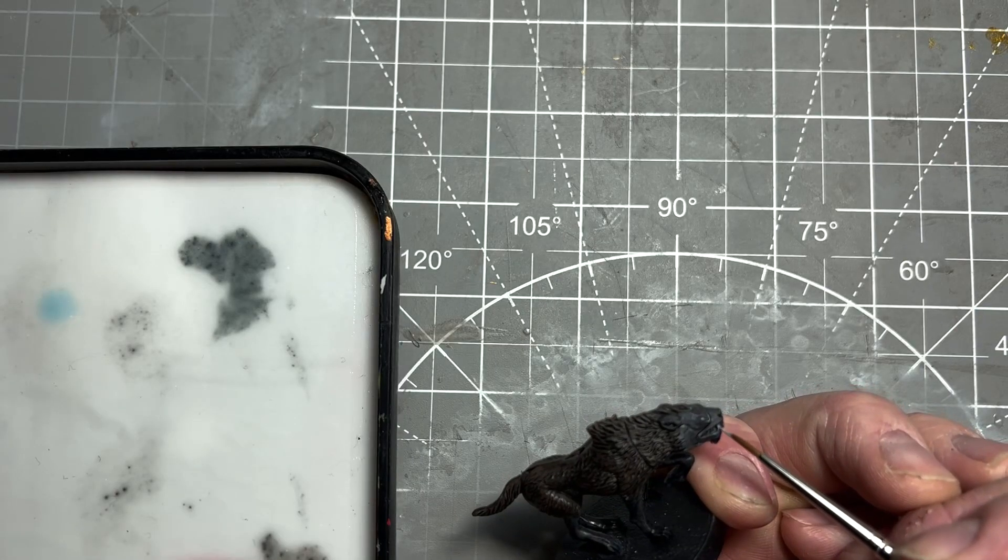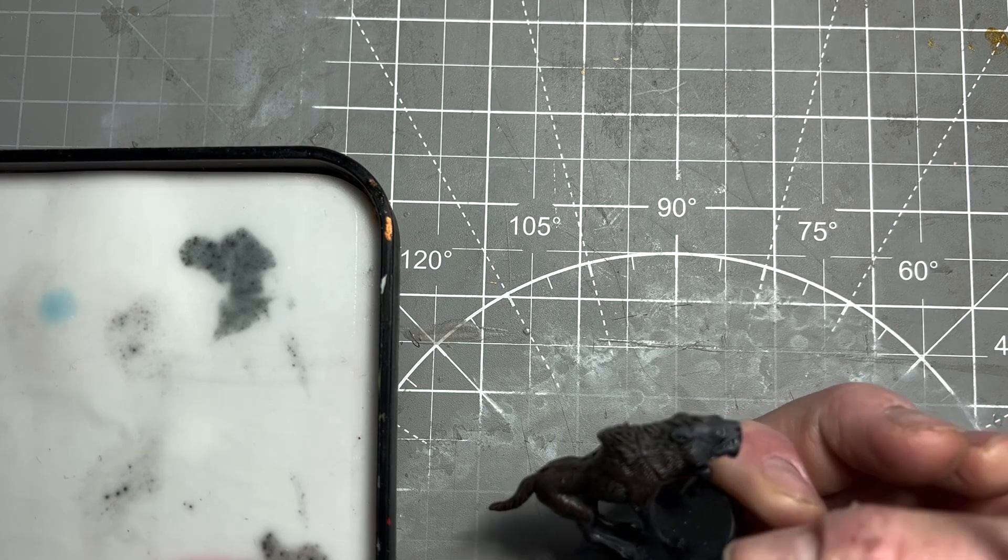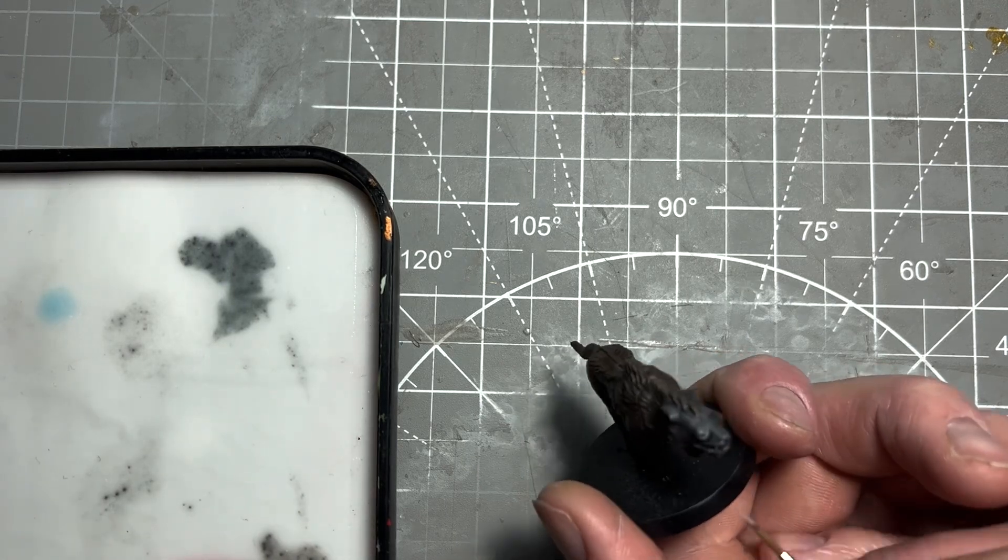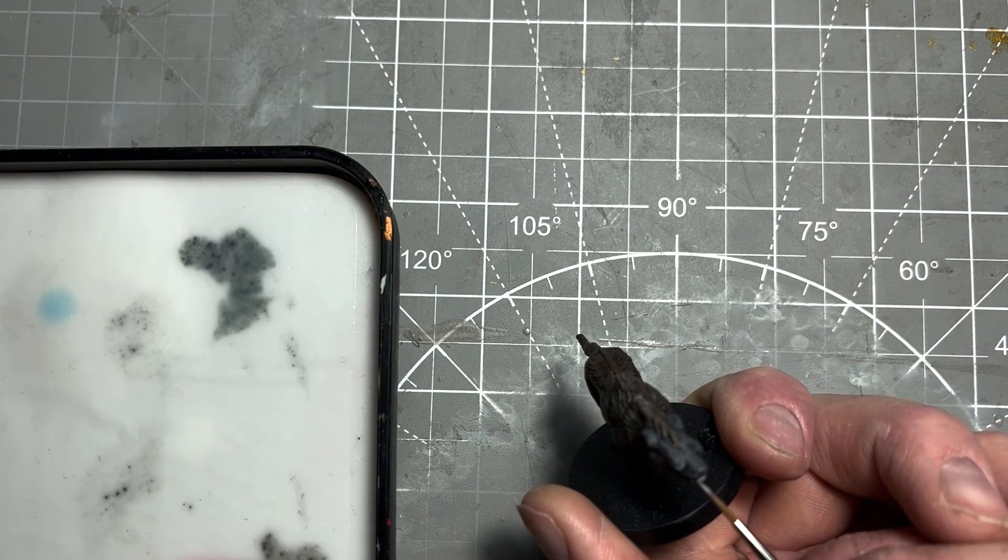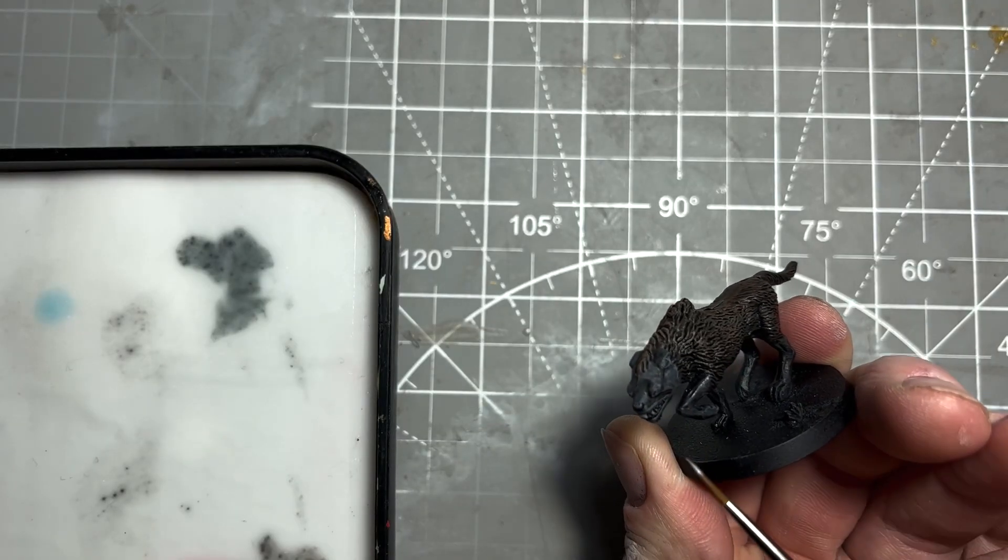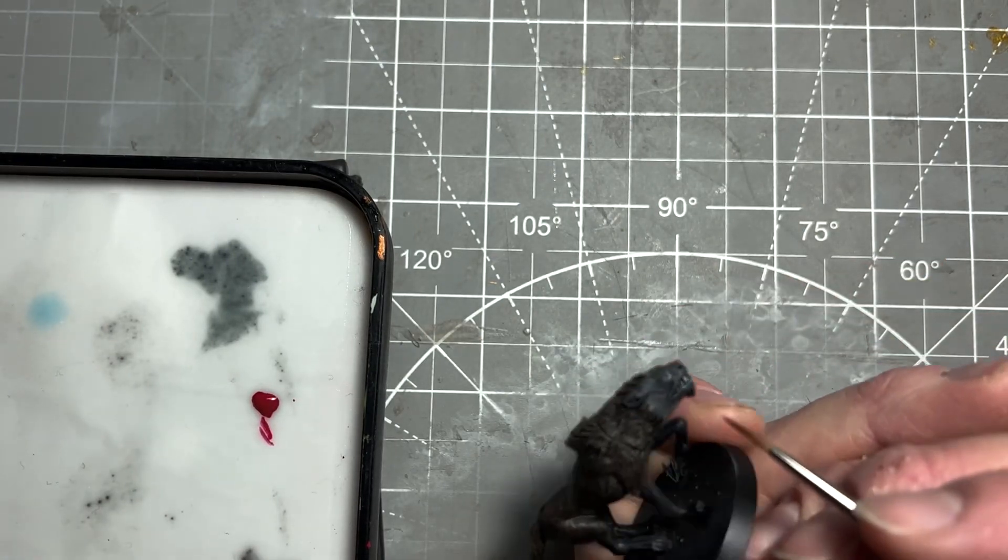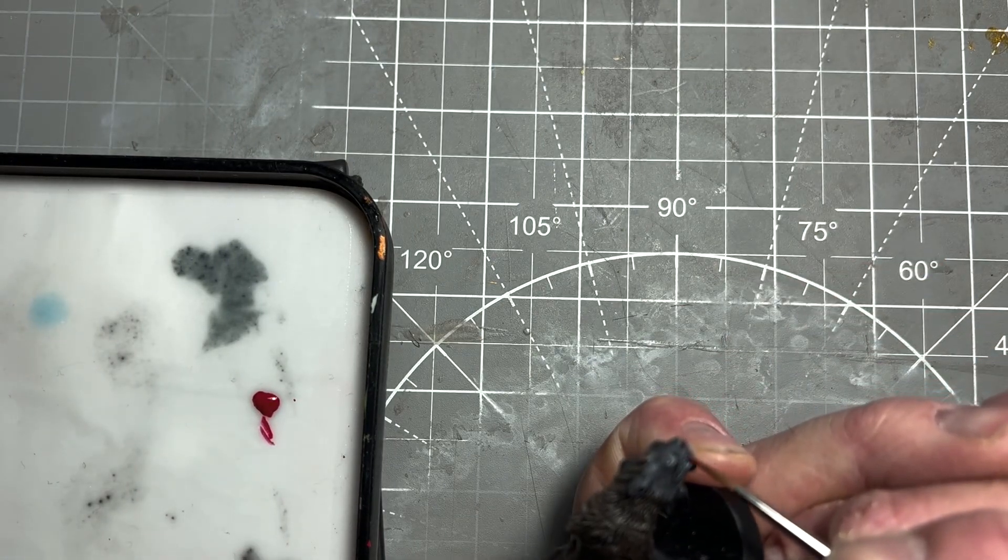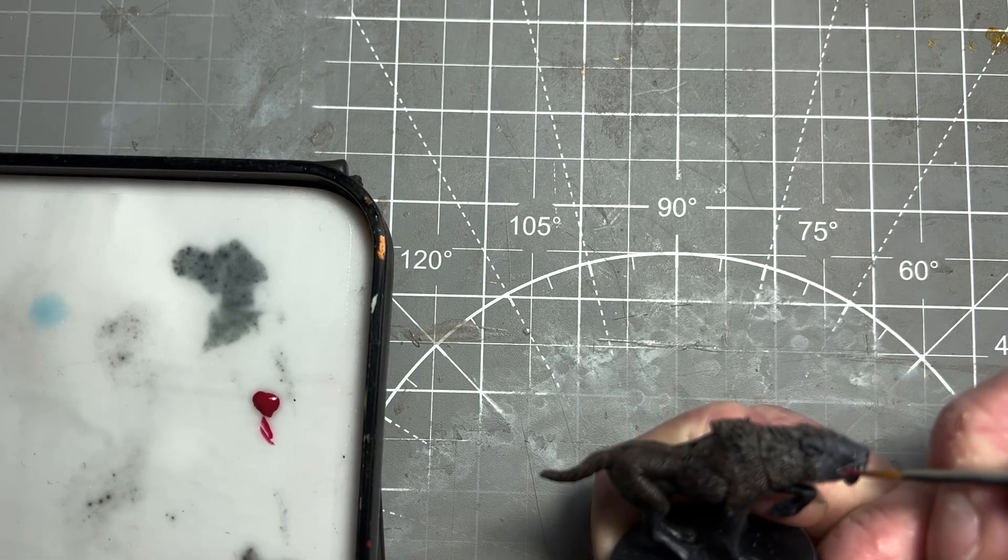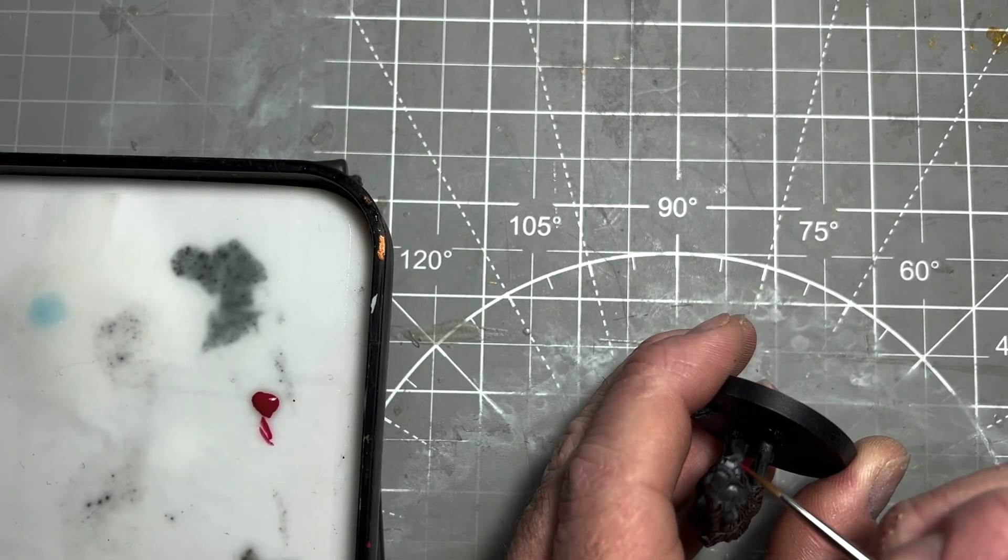With the dry brushing done, we'll focus on the face. First, highlight the individual teeth with a small brush, being careful not to get paint in the grooves—pick out the raised areas to keep the shadows that separate them. Then, for the gums, use Mayhem Red and slowly go around the gum line with a small brush to add separation between the lips and teeth.